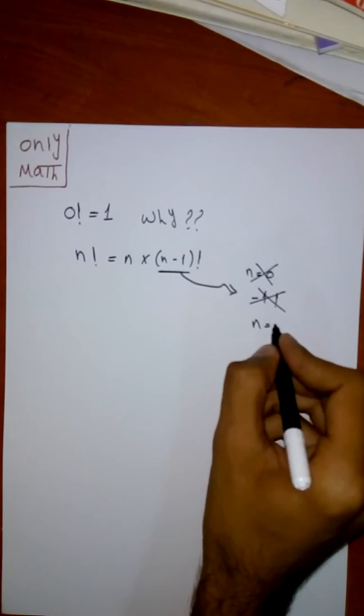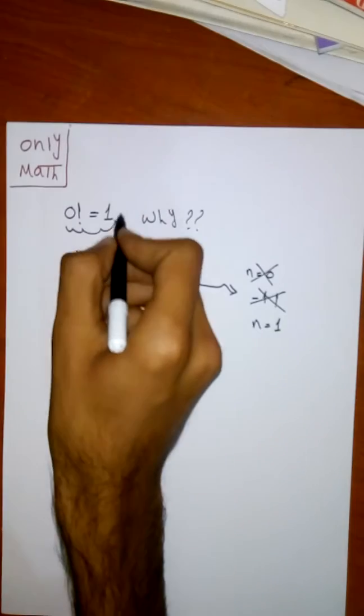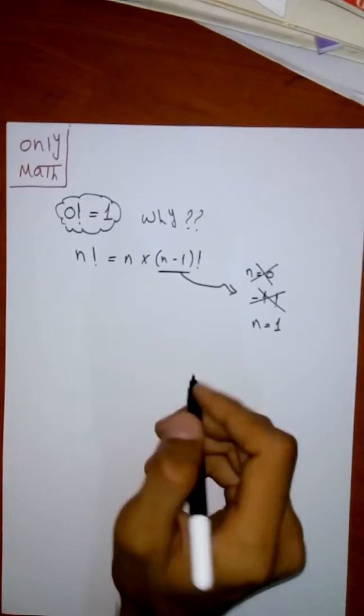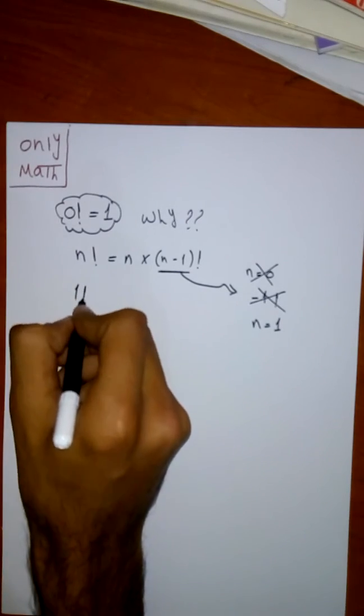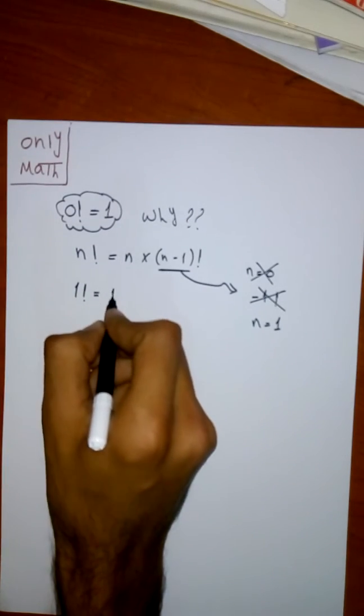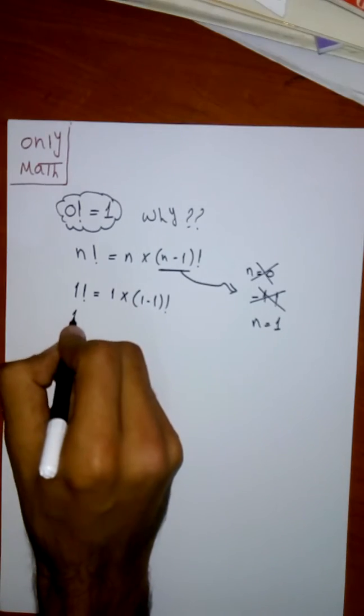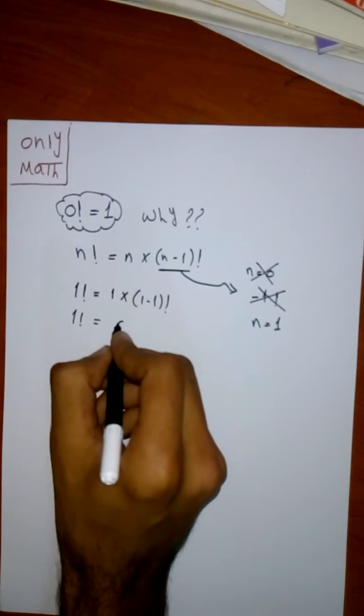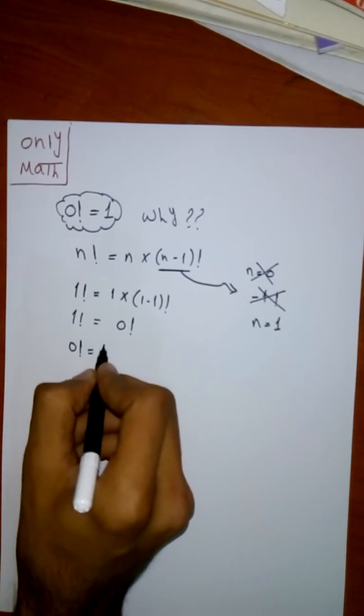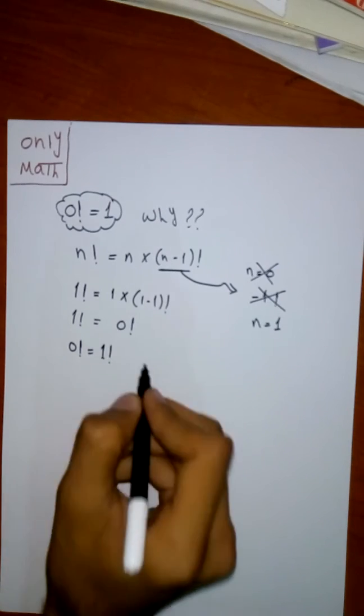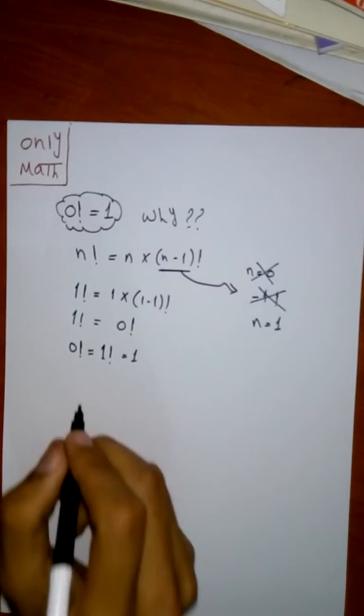We can substitute n by one, maybe by two, anything. But we want to find the factorial of zero. So if we substitute n by one, it will be factorial one equals one times one minus one factorial. So factorial one equals factorial zero. Therefore, factorial zero equals factorial one, which equals one. We have another method.